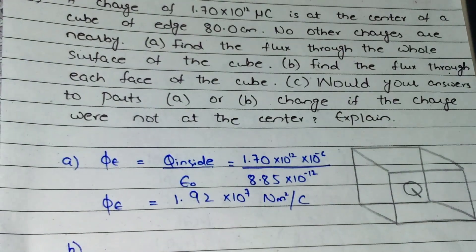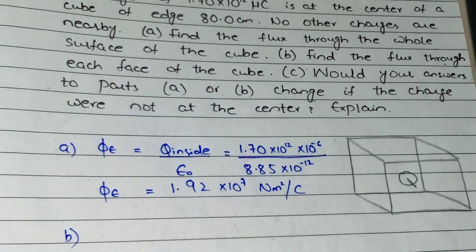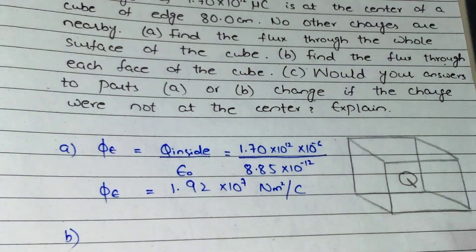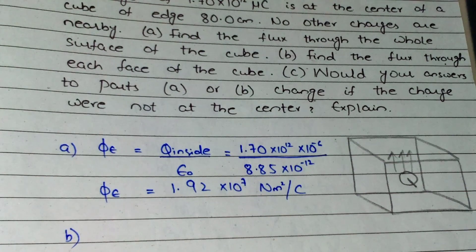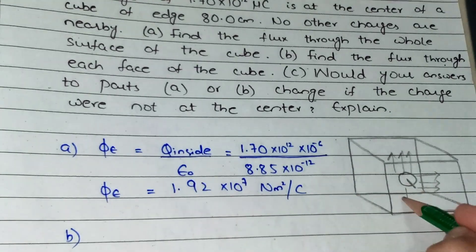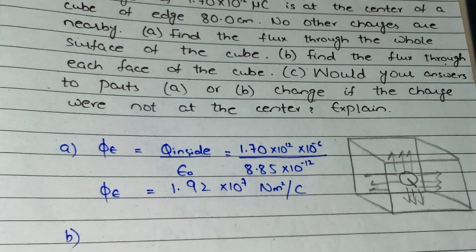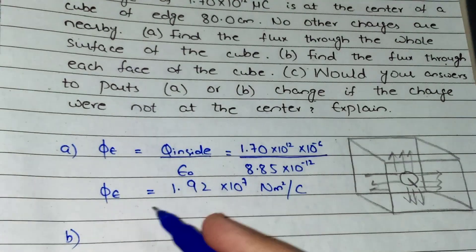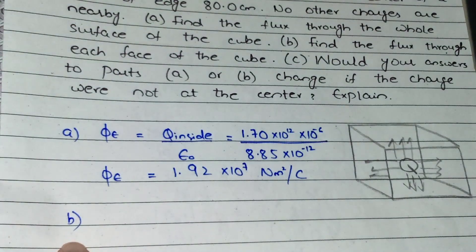Now part B. I have to find the flux through each surface. Because this charge is at the center, it will create the same effect on each surface. In the center position, the charge creates equal flux on every surface. The same effect will happen on all sides.